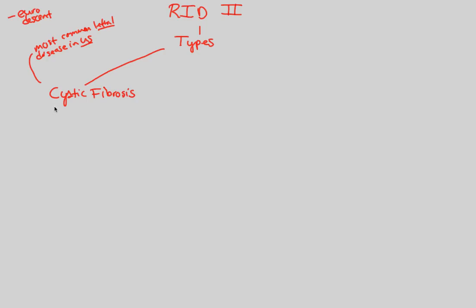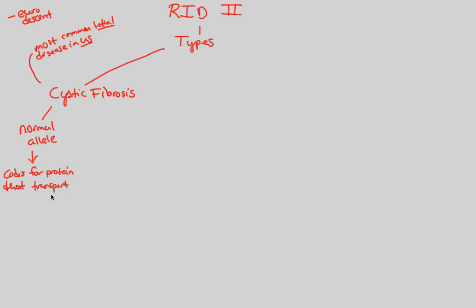The big idea behind this whole lecture is looking at normal and then looking at abnormal. First, let's look at the normal cystic fibrosis allele. In the normal situation — somebody who doesn't have CF — their normal allele codes for a protein. This is just central dogma of biology. It codes for a protein that transports — so it's a transport protein. Specifically, it transports chloride ions, which is a critical transport that needs to happen successfully and correctly.